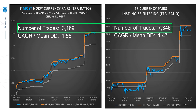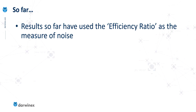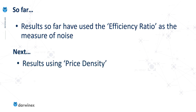The main point is that using both of these techniques produces a significant improvement in results when applied to this particular strategy. So far, all our research has been focused on the efficiency ratio as the measure of noise. But in other episodes, we've also looked at an alternative technique called price density. The next two episodes will compare these results directly with those obtained when using price density instead.